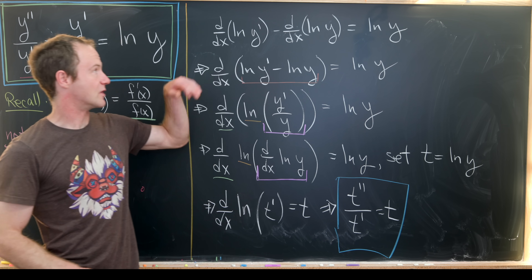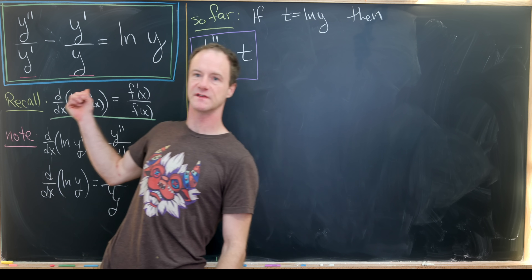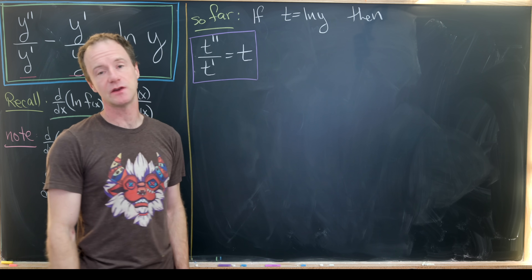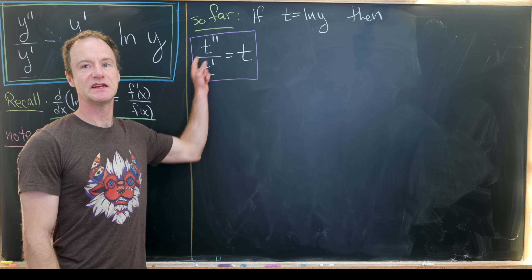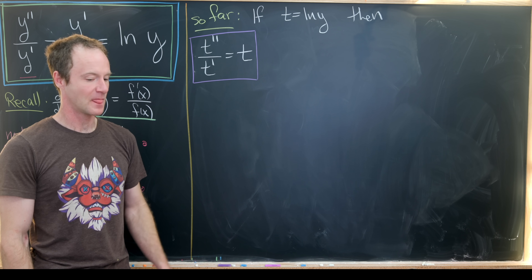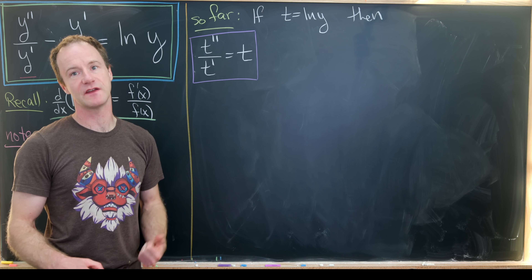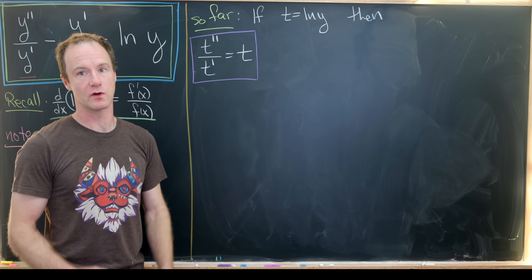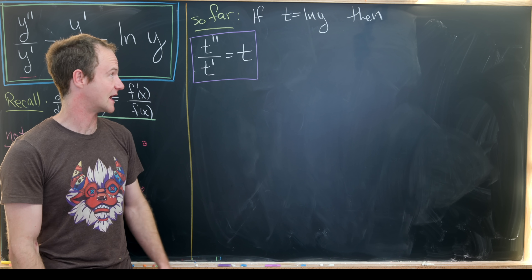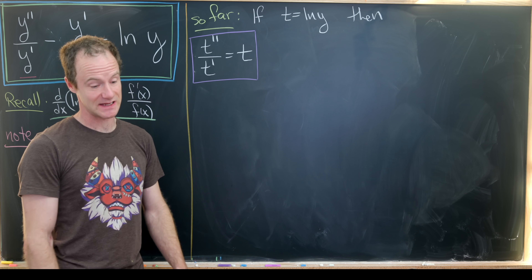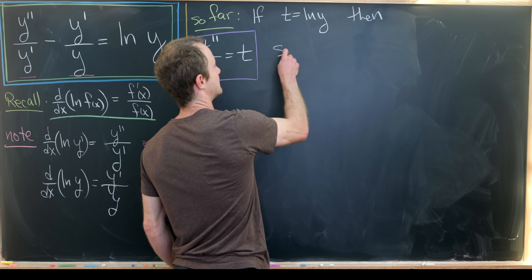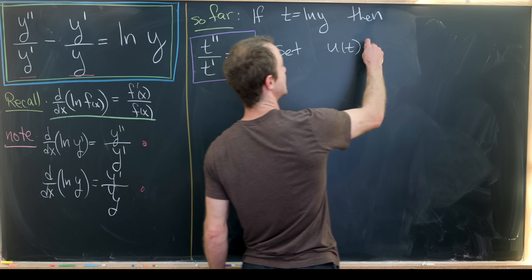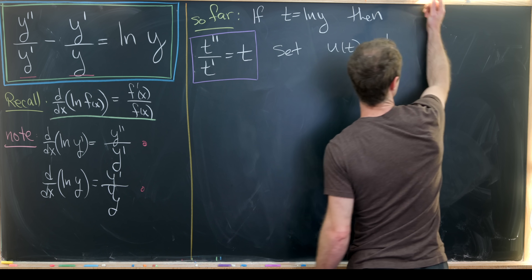Along our path to solve this, the substitution t = ln(y) led us to t'' / t' = t. Now we're going to change the variable of differentiation from x to t using the following trick. We set u(t) = t'. The dependency tree is: u depends on t, t depends on y, and y depends on x.